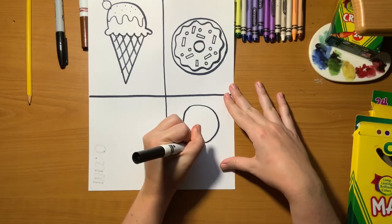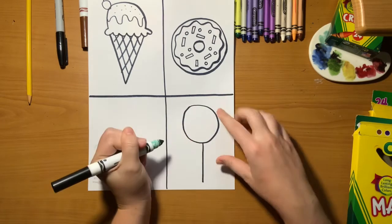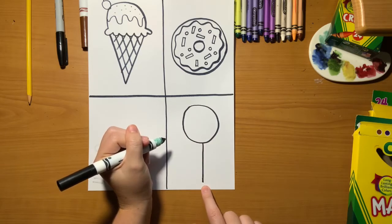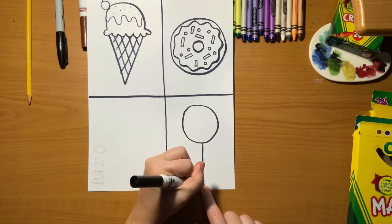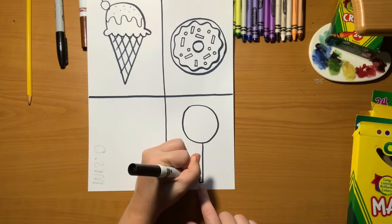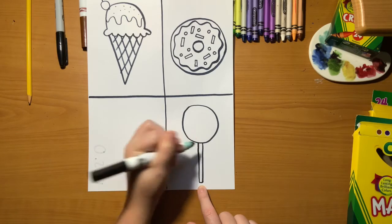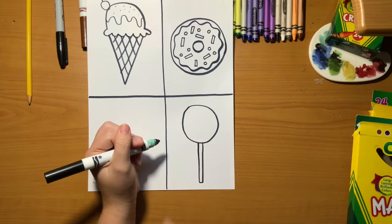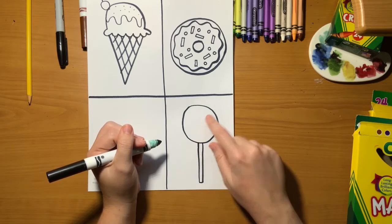A big circle, but leave room for a very long straight line underneath. Then draw a little line sticking out to the side and then another very long straight line connecting back up to our lollipop for the stick, like a very long skinny rectangle.